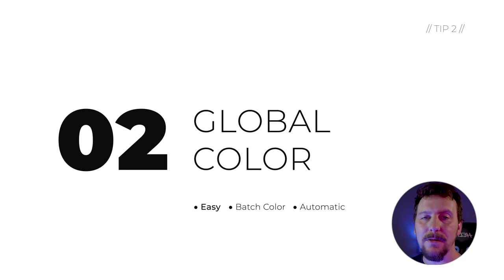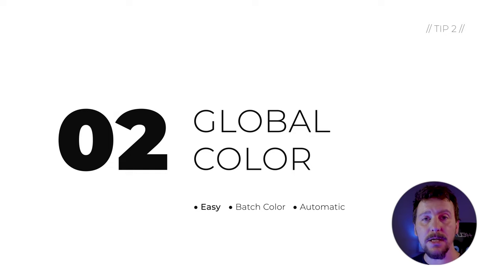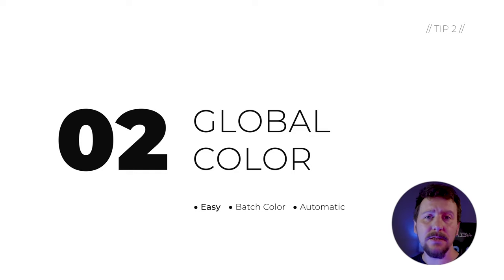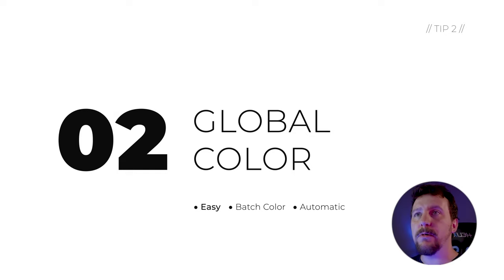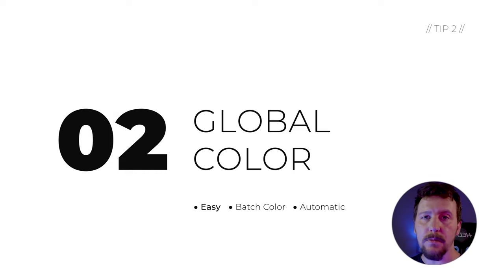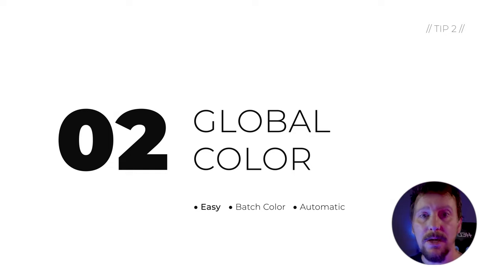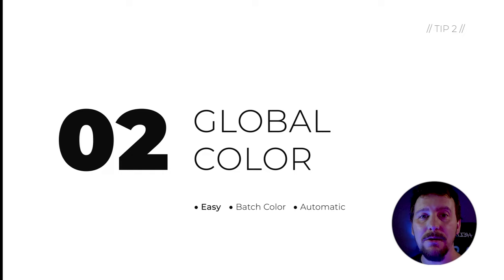For tip number two, we're going to talk about global swatches. Managing colors is kind of a tedious process because I can never decide on a color scheme until the document is done, and I'll spend way too much time going back and tweaking individual colors. With global colors, you can assign a color swatch to multiple objects and then change that color for everything in the document all at once.